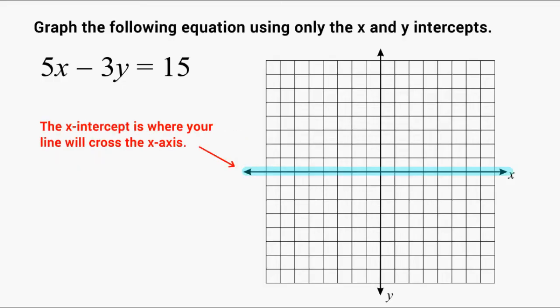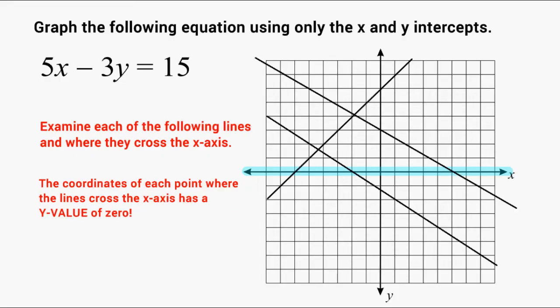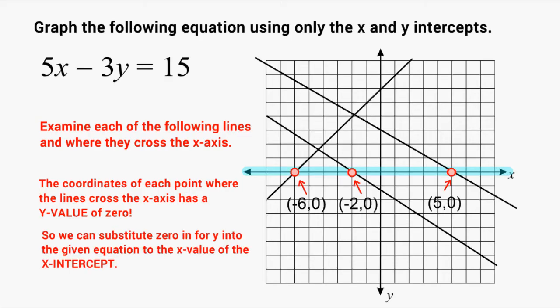Now remember, the x-intercept is simply where your line will cross the x-axis, shown right here highlighted in blue. And wherever your line crosses the x-axis, we should know that our y-value will always be zero. For example, let's examine each of these lines that cross over the x-axis. If you take a look at the three points where each of those lines cross the x-axis, we should notice that the y-value is going to be zero.